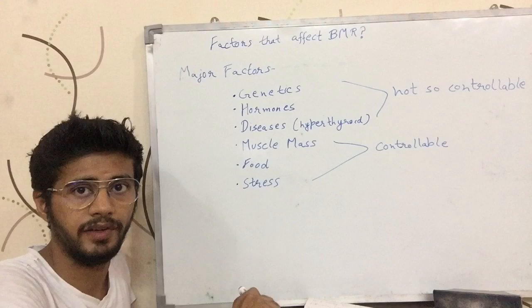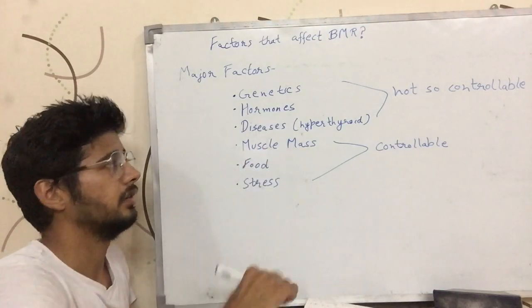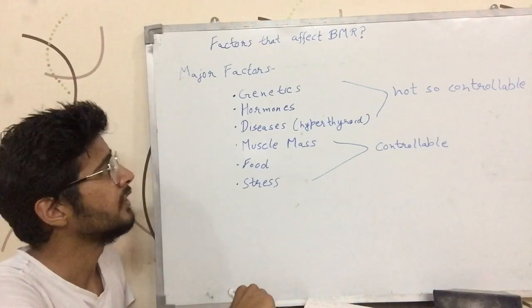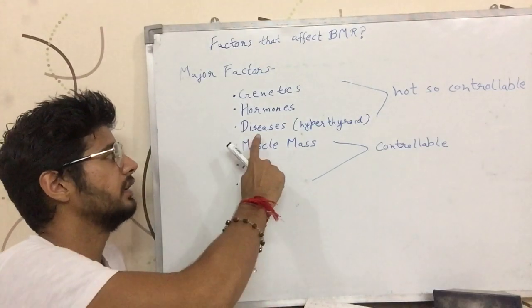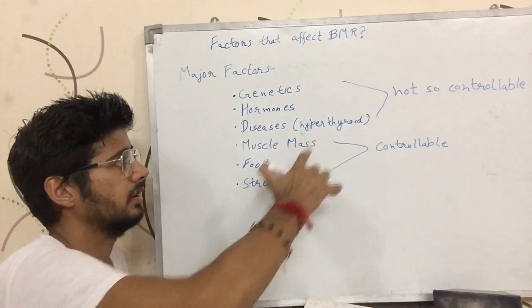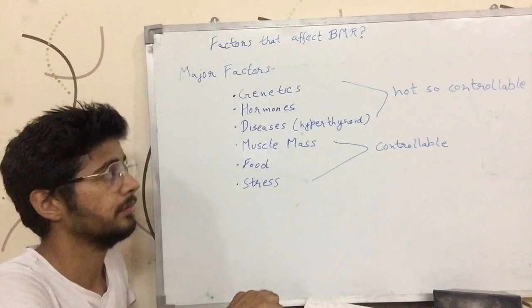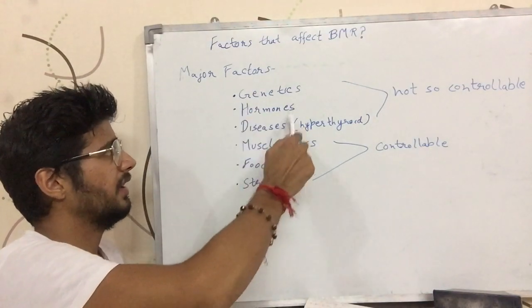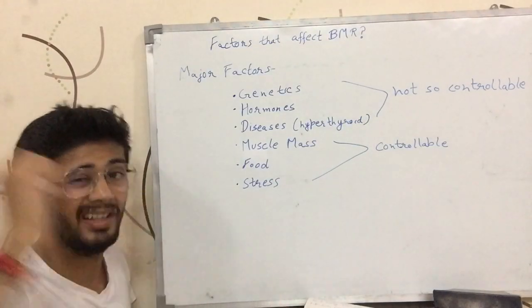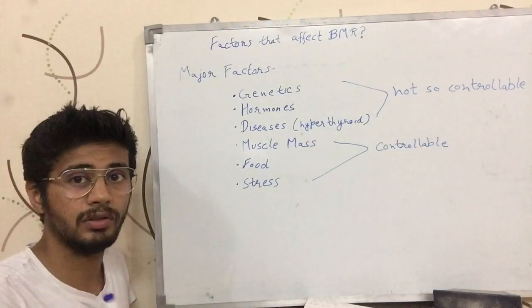The second factor is the level of different hormones in your body. The third factor is if you have any disease — for example, in hyperthyroid your BMR increases a lot. So these are some factors that are not so controllable by you: your genetics, your hormone levels, or the diseases that your body gets are not so much controllable by a layman.